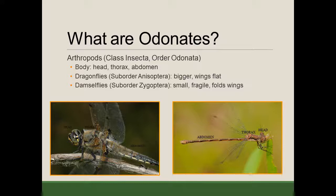Odonates are divided up essentially into two suborders — there's a third, but they're very uncommon, so we don't generally discuss them. Dragonflies are in suborder Anisoptera, and that's the picture on the left. And then damselflies, which are suborder Zygoptera, and that's the image on the right. One of the questions I get most frequently, especially from people that don't have any familiarity with Odonates, is how do you identify between a dragonfly and a damselfly?